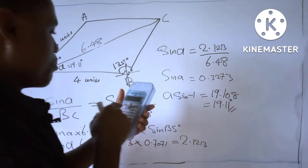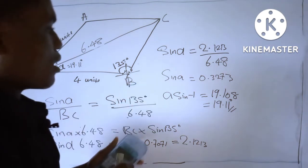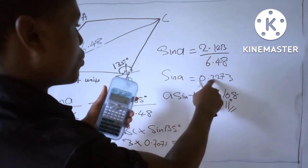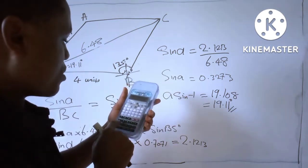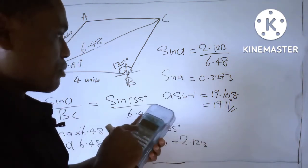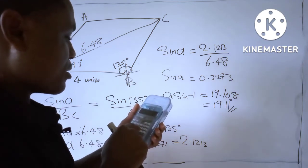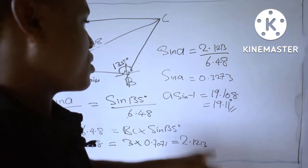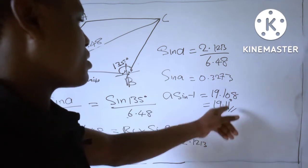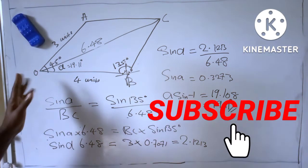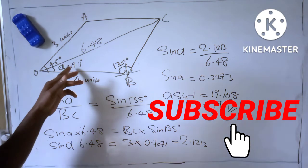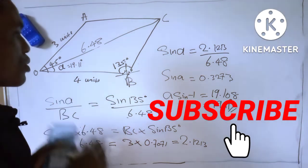Let me show you how we got 19.108° on the calculator. Press Shift, then press sin, then enter 0.3273 — it will give you 19.108°. Rounding gives 19.11°. So this is how to calculate OC, which is the resultant, and the direction angle.